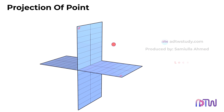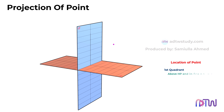Consider a point located in the first quadrant. In such a scenario, the point is described as being above HP and in front of the VP. If the same point rests on the HP plane, it is designated as on HP and in front of the VP. Similarly, if the point rests on VP, it is termed as on VP and above HP.